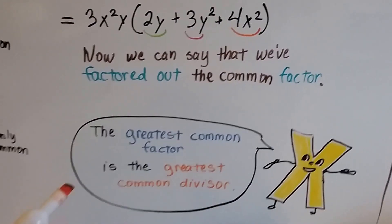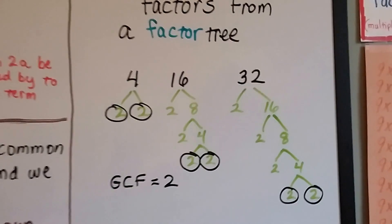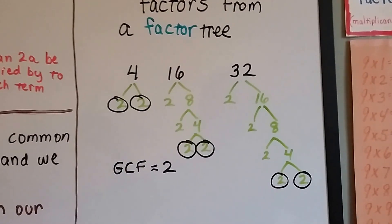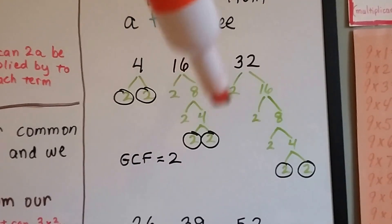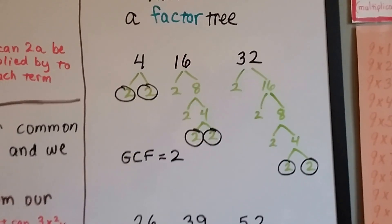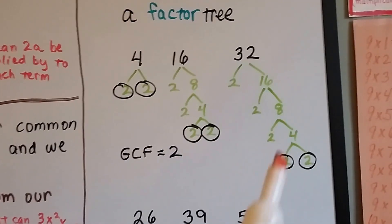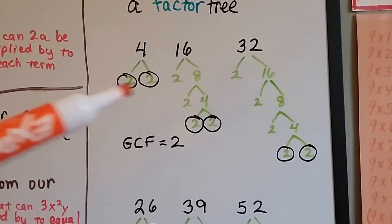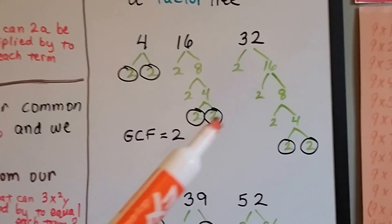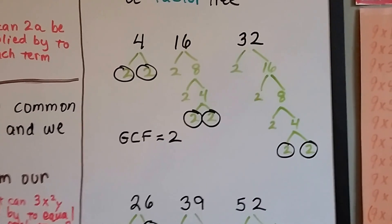Remember, the greatest common factor is just the greatest common divisor. Here are the greatest common factors from a factor tree. If we had 4, 16, and 32: 4 breaks into 2 times 2. For 16, we get 2 times 8, the 8 breaks into 2 times 4, and the 4 breaks into 2 times 2. For 32, it breaks into 2 times 16, then 2 times 8, and the 8 breaks into 2 times 4, and the 4 into 2 times 2. Because 4 is so small and only has a 2 times 2, 2 ends up being the greatest common factor for 4, 16, and 32.